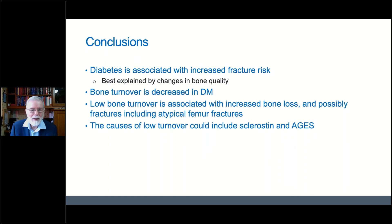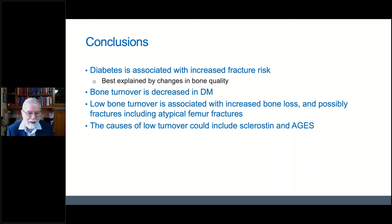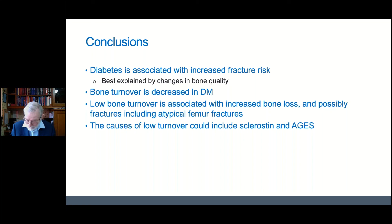To finish: diabetes is associated with increased fracture risk best explained by changes in bone quality. Bone turnover is decreased in both type 1 and type 2 diabetes. In type 2 diabetes, low turnover is associated with increased bone loss and possibly fractures, and may even relate to atypical femur fractures. The causes of low bone turnover may be related to local factors such as sclerostin and AGEs. Thank you very much for your attention.